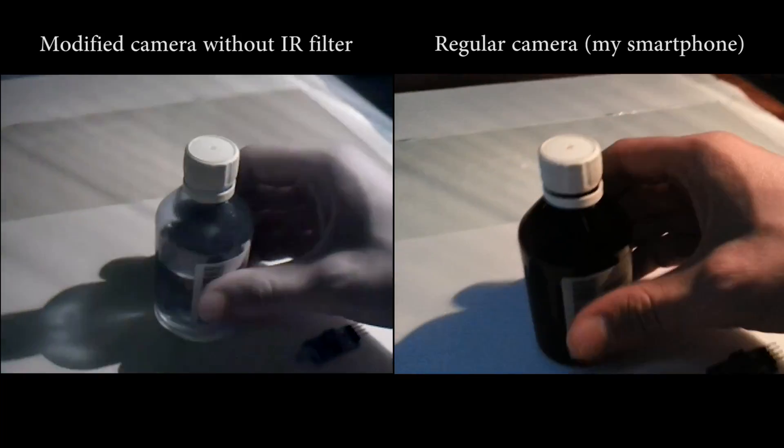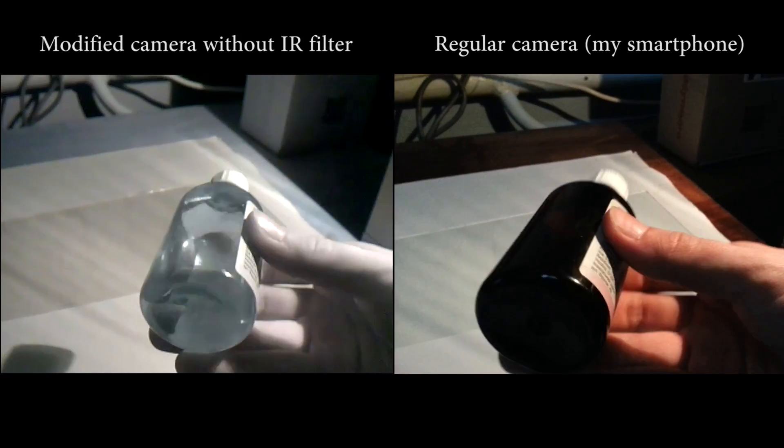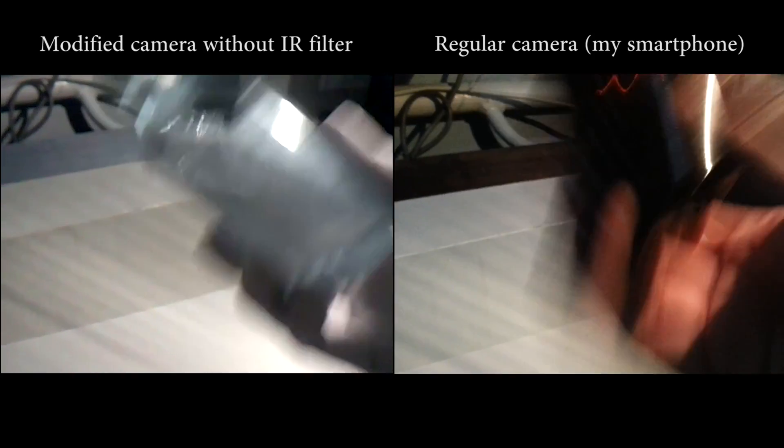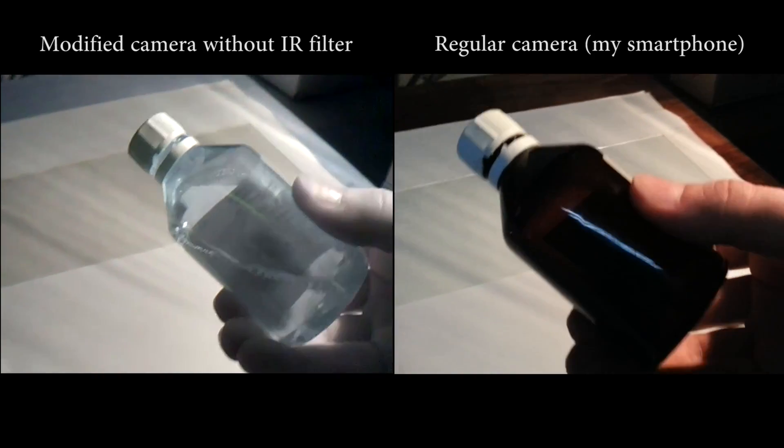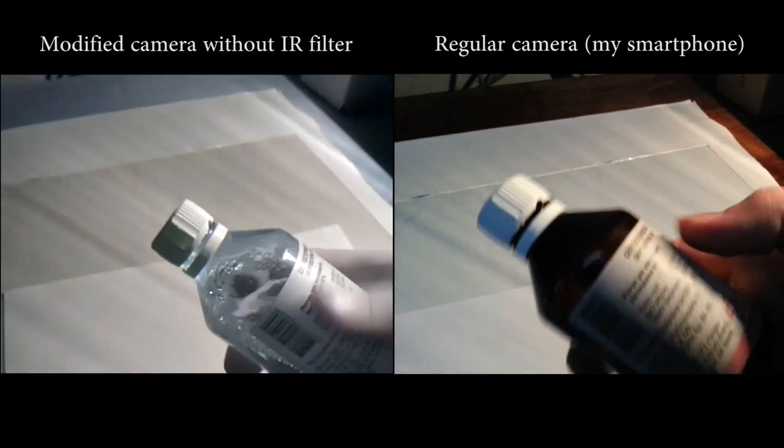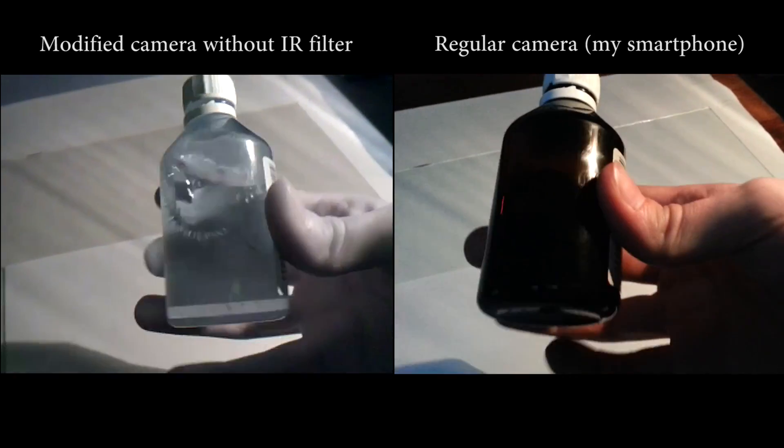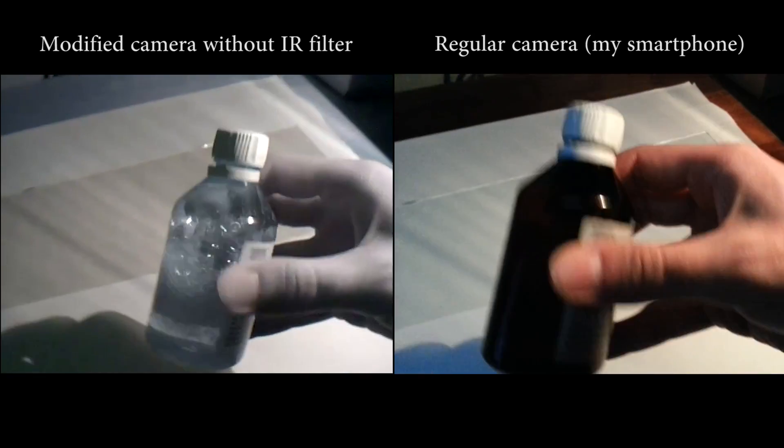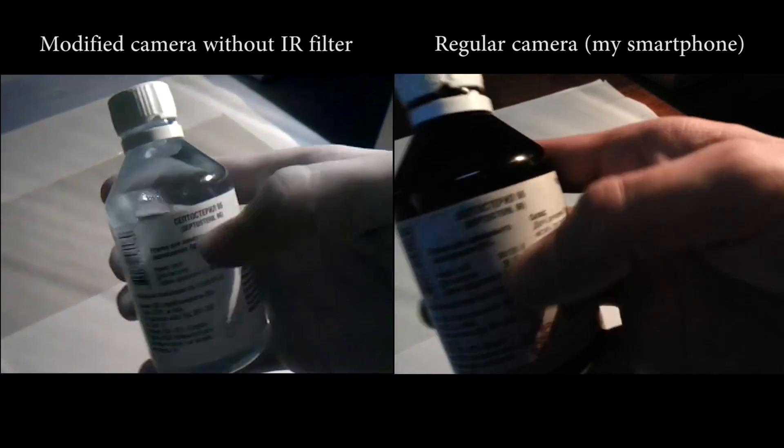Now check this bottle out. For the regular camera, it looks very dark and almost not transparent. But with a modified camera, we can easily see what's inside this bottle. You can only observe this effect if you use a light source that produces a lot of infrared light. A regular incandescent light bulb is perfect for such purposes.